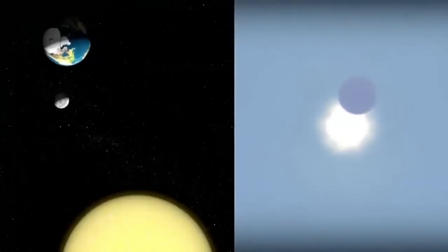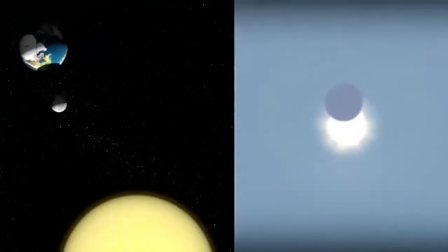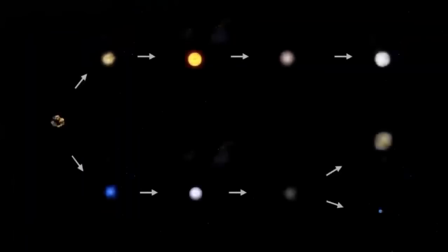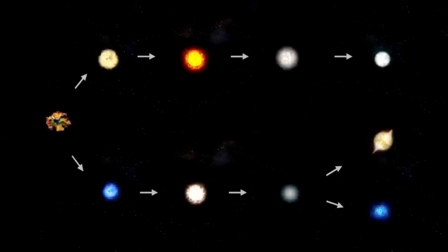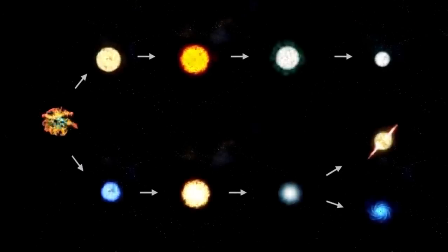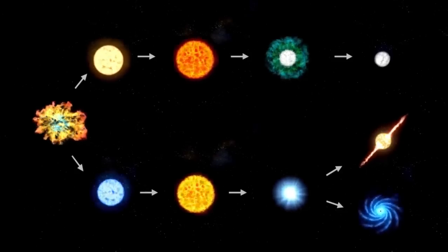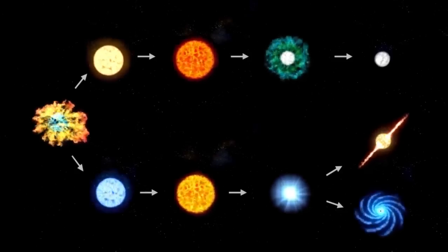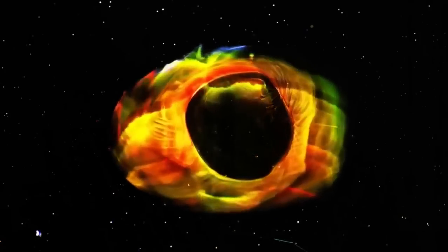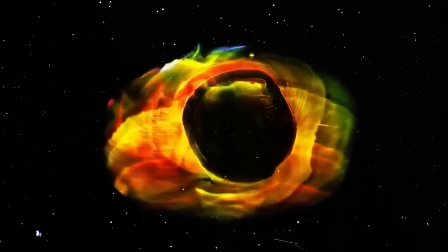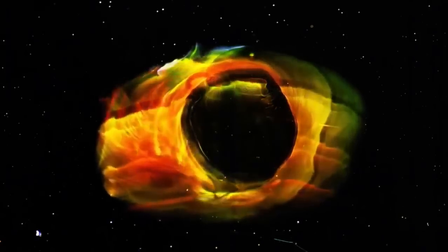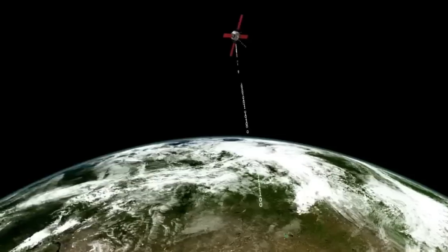The anticipation surrounding Betelgeuse's supernova stems from the fact that it will be an extraordinary event. Positioned roughly 650 light-years away, humanity finds itself in an optimal location to witness this cosmic spectacle firsthand. When the stellar explosion occurs, it will produce a breathtaking display of light. Initially, there will be an abrupt influx of neutrinos that will sweep across the Earth, detectable by observatories worldwide.